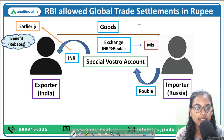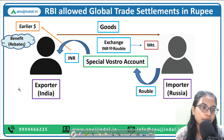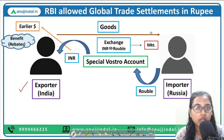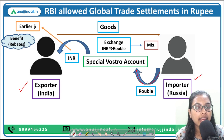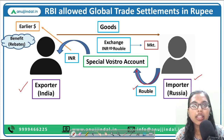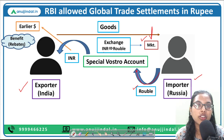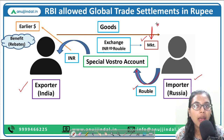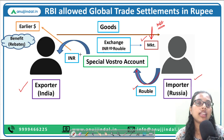Let's look at this from the exporter's point of view. The exporter exports goods, the importer receives them and pays in his home currency — ruble. This ruble gets deposited in the special Vostro account. Within that Vostro account, there is an exchange mechanism whereby the ruble is converted back into INR at the market-led rate. RBI has stated that any currency conversion or exchange will happen at market-led rates.